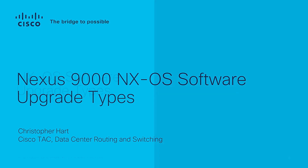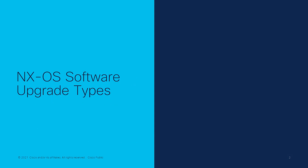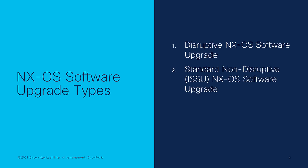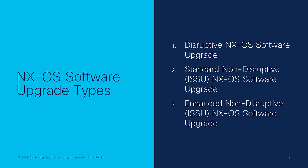Let's get started. There are three options you can use to upgrade the NXOS software of a Nexus 9000 series switch. First, you can perform a disruptive NXOS software upgrade. Second, you can perform a standard non-disruptive NXOS software upgrade, sometimes called a standard in-service software upgrade or ISSU for short. Third, you can perform an enhanced non-disruptive NXOS software upgrade, sometimes called an enhanced ISSU. We will describe each of these options in more detail in this video.